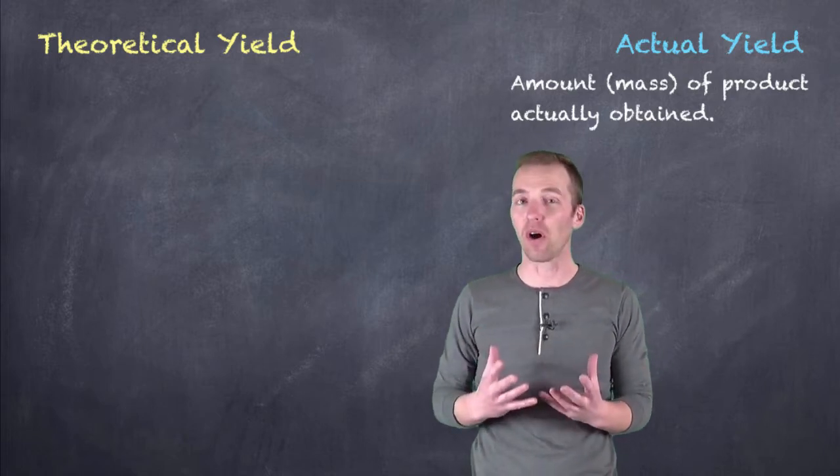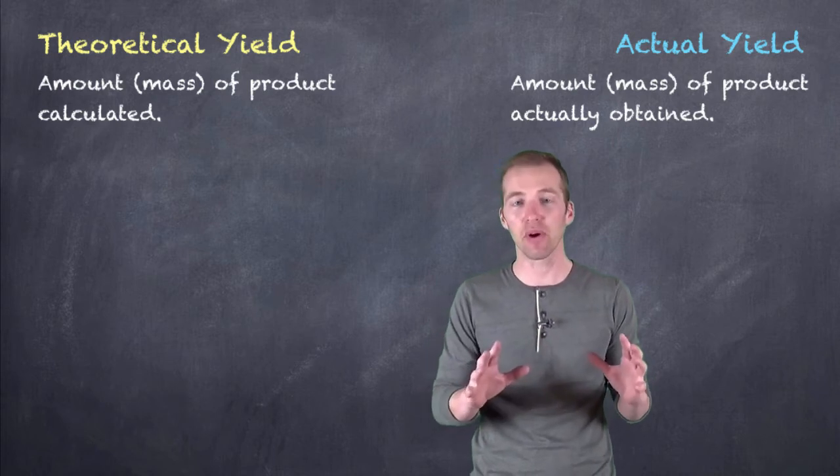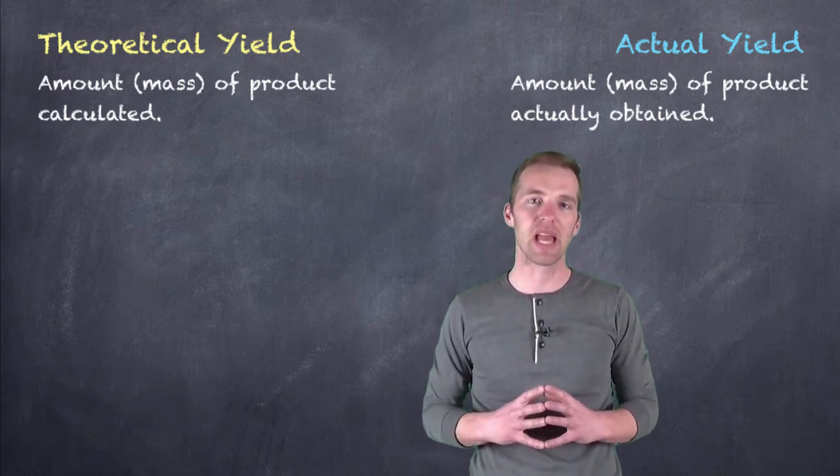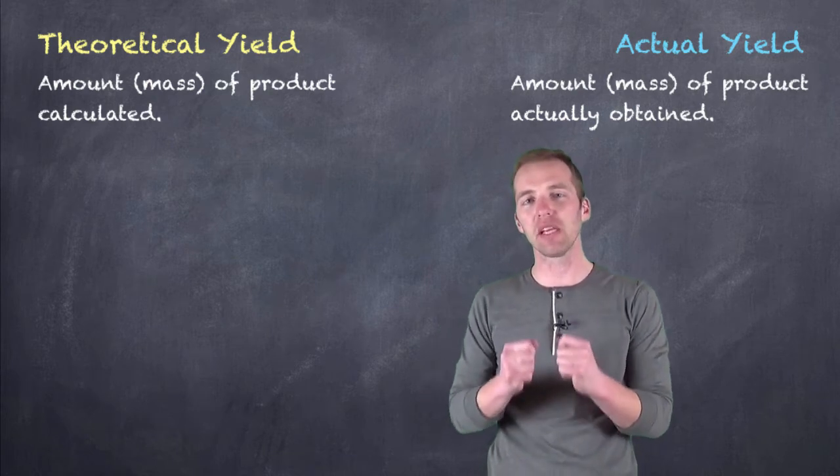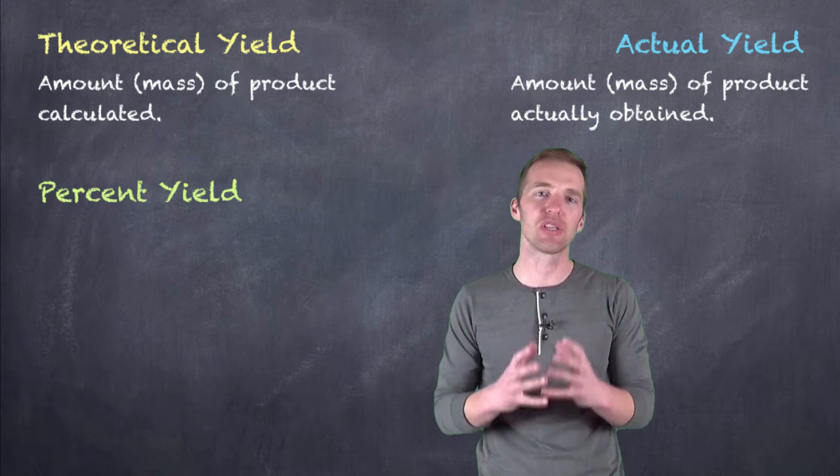The theoretical one is the one that you calculate. So theoretically, if everything went perfect, that would be the mass that you should obtain in that particular reaction. And if we compare these two things together, what we come up with is our percent yield.